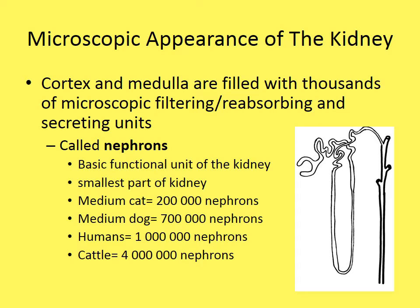A medium-sized cat has about 200,000 nephrons in one kidney. A medium dog has about 700,000, humans have one million, and cattle have an impressive four million nephrons in their kidneys.